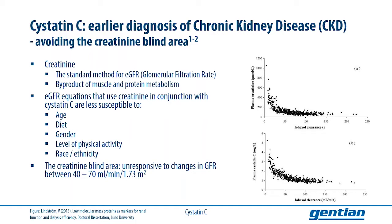Another benefit of using CYSTATIN-C as a marker of renal function is that it allows for diagnosis of CKD in its earlier stages. Whereas serum creatinine concentrations are unresponsive to changes in GFR between 40 and 70 milliliters a minute — a range referred to in literature as the creatinine-blind area — CYSTATIN-C concentrations in blood correlate well with GFR changes within the same range.